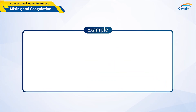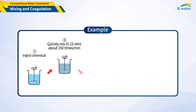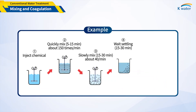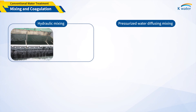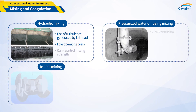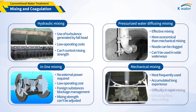To determine the optimal injection rate, a jar test is commonly used to simulate actual mixing, coagulation, and sedimentation processes. For rapid mixing, there are four methods: mechanical mixing, hydraulic mixing, in-line, and pressurized water diffusing mixing. The main features of each method are as follows.